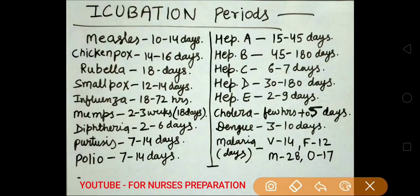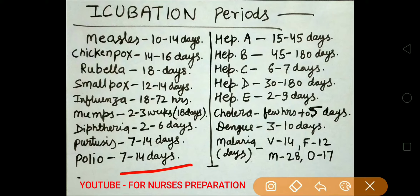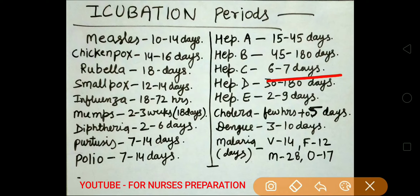Diphtheria 2 to 6 days. Pertussis 7 to 14 days. Polio 7 to 14 days. Hepatitis A 15 to 45 days. Hepatitis B 45 to 180 days. Hepatitis C 6 to 7 days.